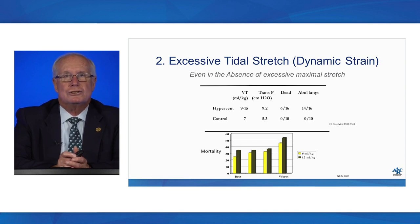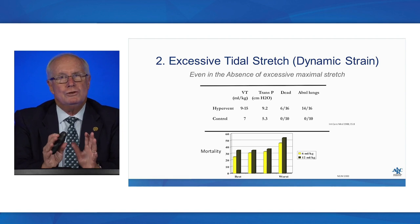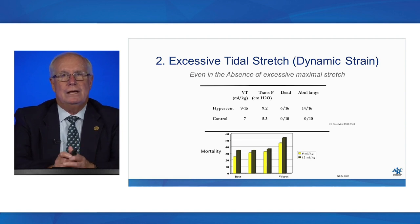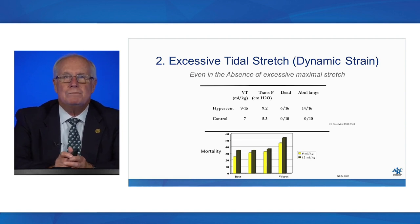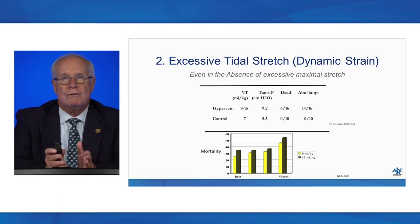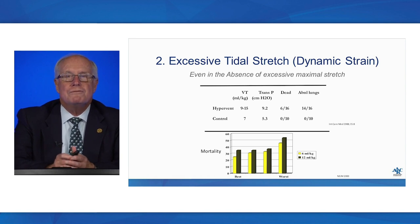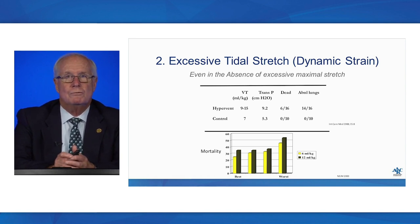Let's look at tidal stretch, or dynamic strain. You can have excessive dynamic strain even in the absence of excessive static strain — a tidal volume that is excessive can cause harm even if the maximal stretching pressure on the lung is less than 30 cmH2O.